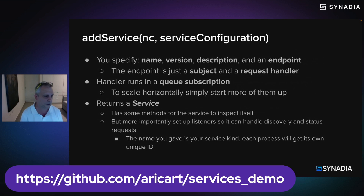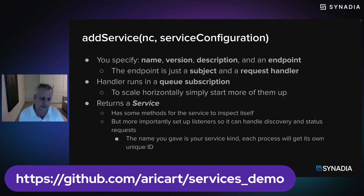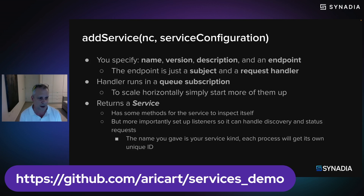The way it's done is fairly simple. If you're familiar with NATS, it'll look very similar to a NATS subscription with the addition of some metadata. When you add a service, all you're really doing is specifying a name, a version, and a description — metadata we use for the monitoring aspect. Then you define an endpoint: the subject the service will listen to and the handler that will process those requests. Those requests run as a queue subscription, so the server selects a single service instance to execute the request. This makes it very easy to scale horizontally — just start more services to scale up, or remove some to scale down.